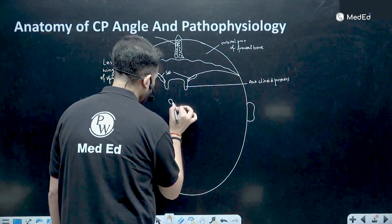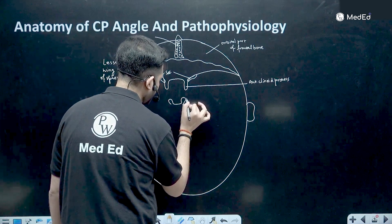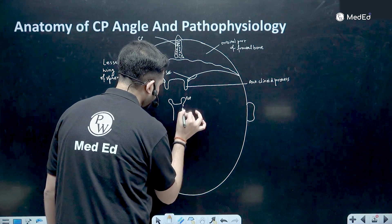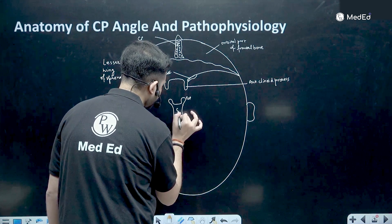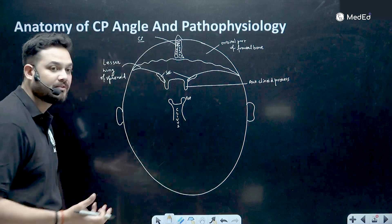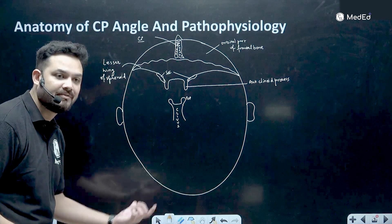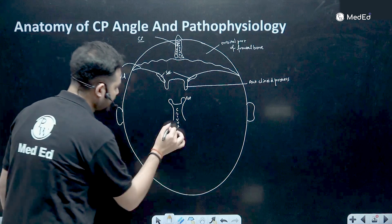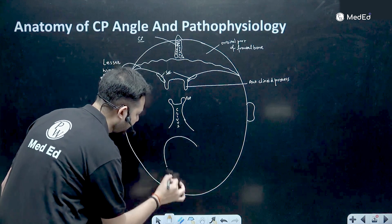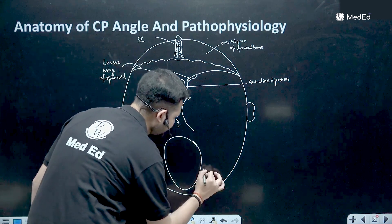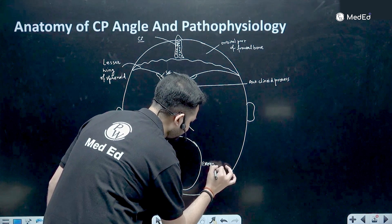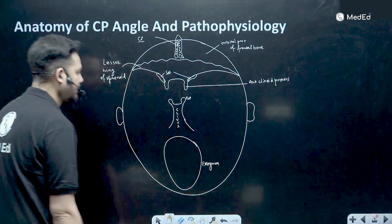You have two processes called the posterior clinoid process, and there is a projection down from this posterior clinoid process called the clivus. This clivus also forms a part of the sphenoid bone and comes down to a huge foramen behind, which is oval — this is called the foramen magnum. Magnum means large.